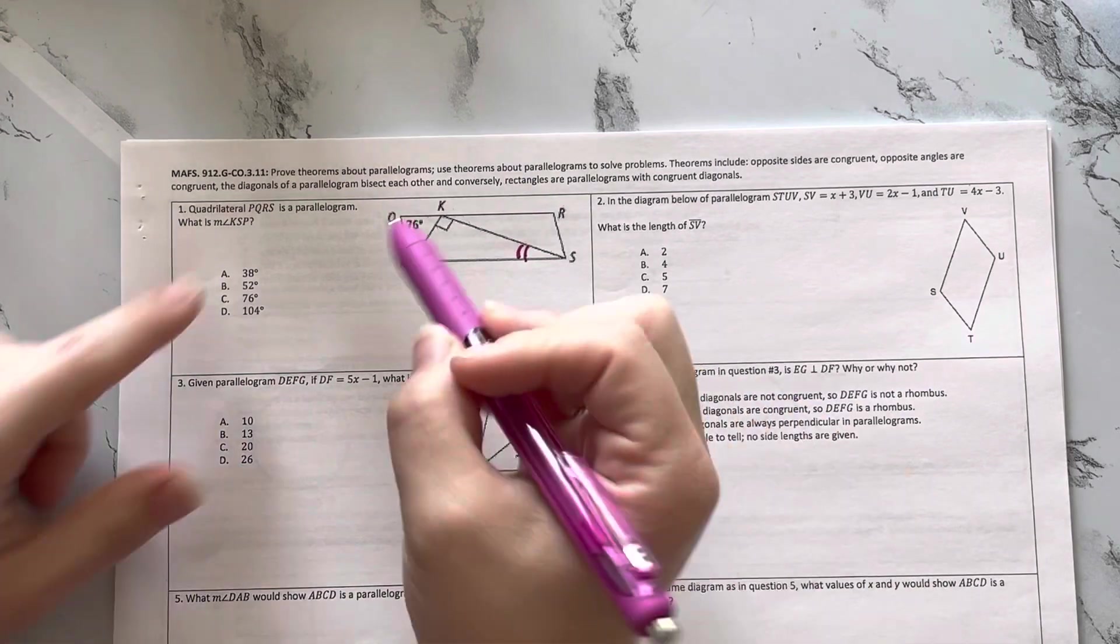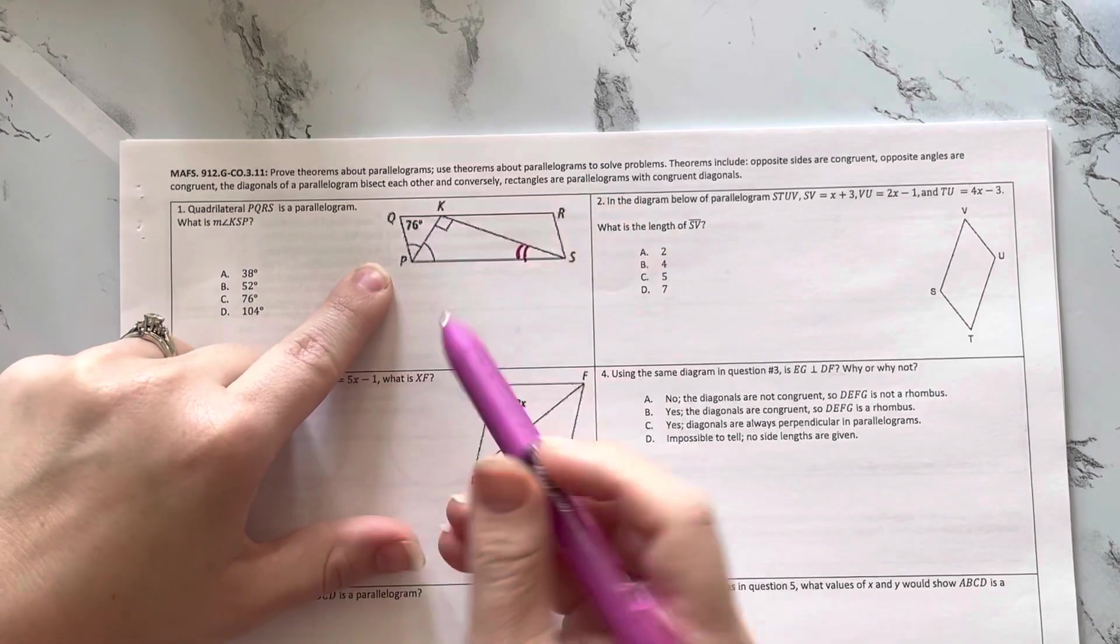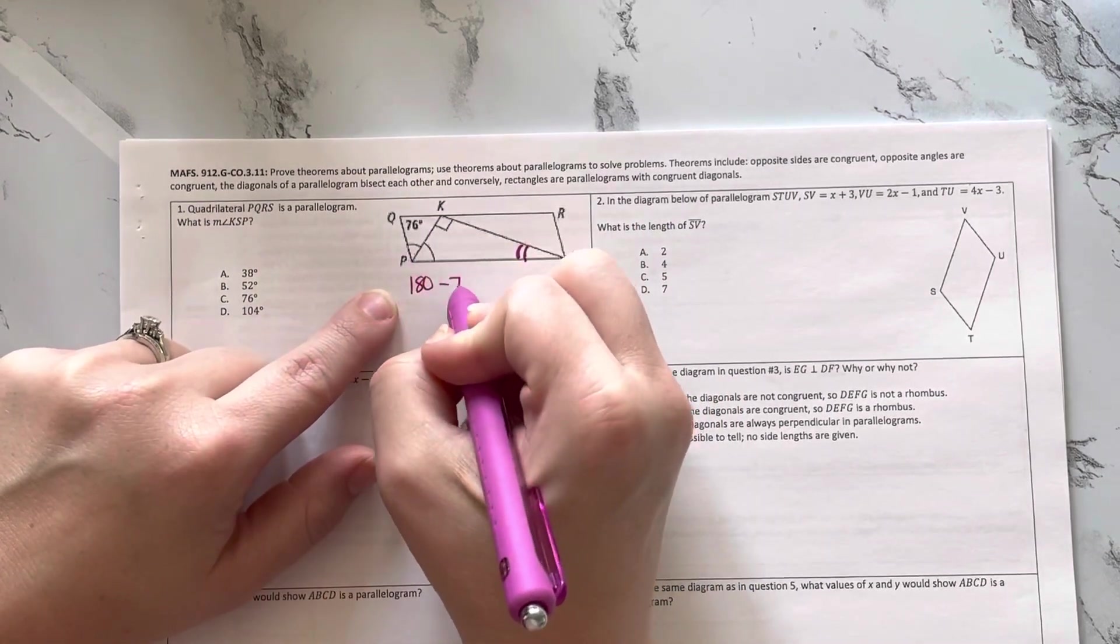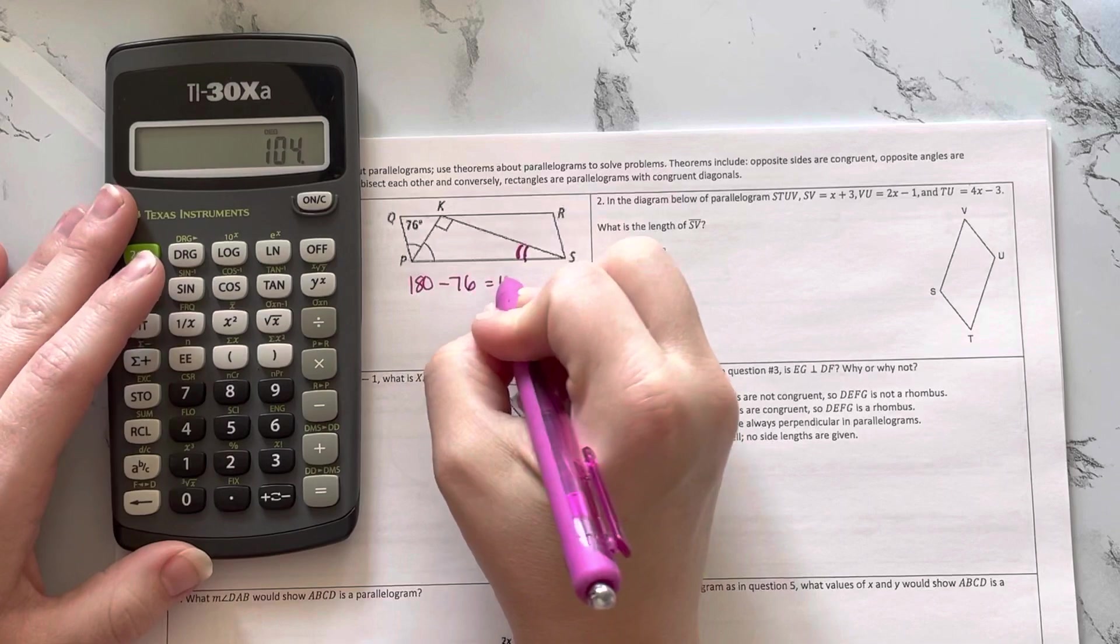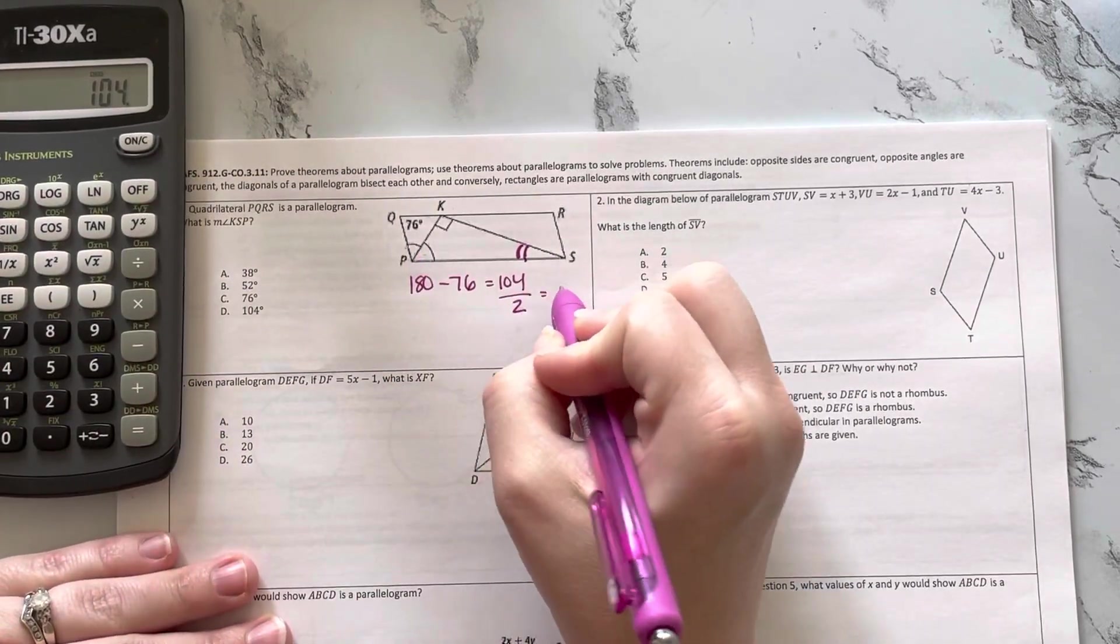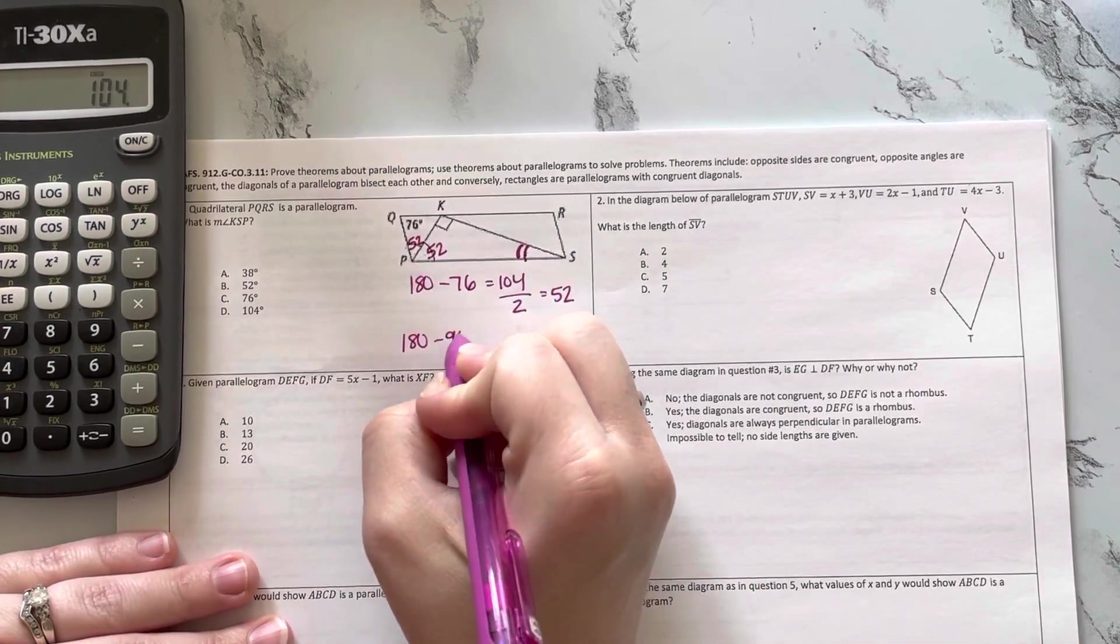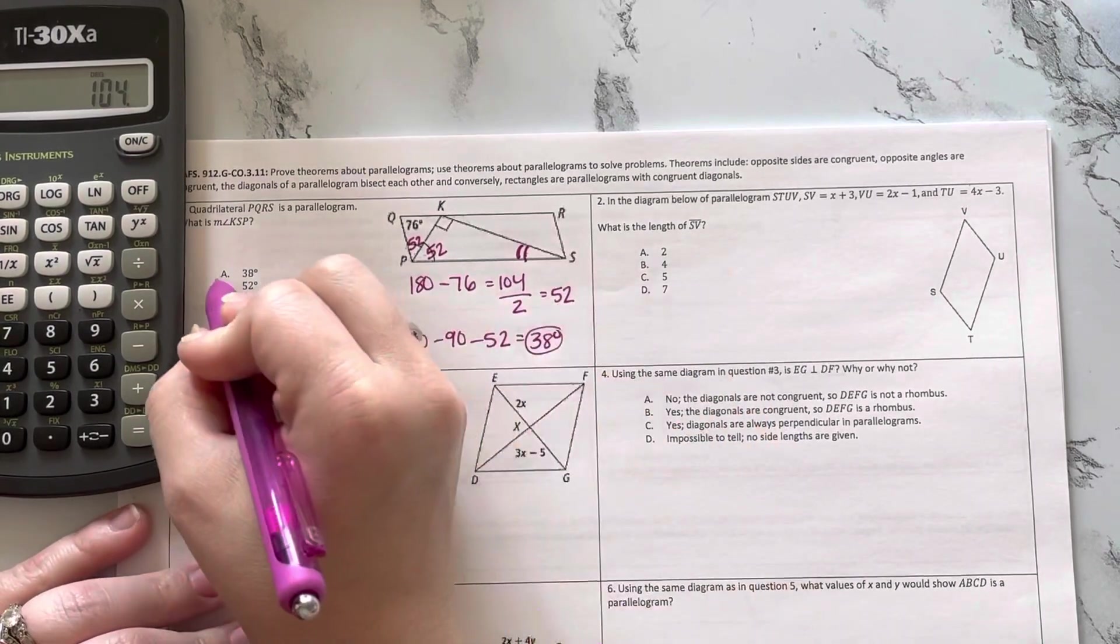Alright, so if it's a parallelogram, the angles next to each other are supplementary. And I noticed that these angles are congruent. So if I can figure out this angle, I can know both of these. Let's see, 180 minus 76. Okay, 104. Now both of these are congruent, so I'm going to divide that by 2 to get 52. So that means this is 52 and this is 52. Now these add up to equal 180. So 180 minus 90 minus 52 equals 38. So A.